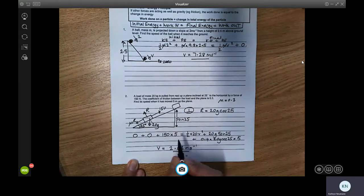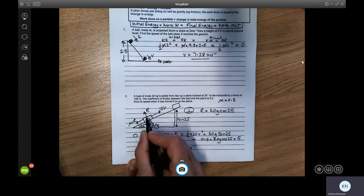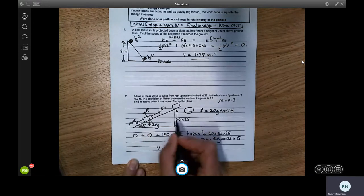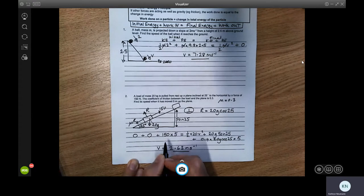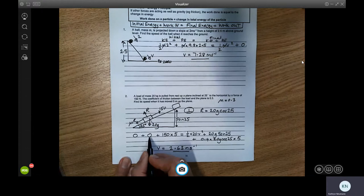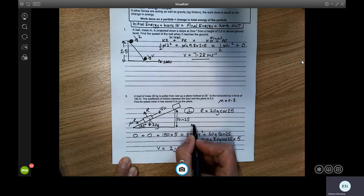So the first thing we need to do is find the normal reaction. So when we look at the normal reaction here, we've got R is equal to 20G cos 25 because that's the resolved force of the 20G. We're then going to apply the work energy principle. So if we look, we've got zero KE at the beginning because it's pulled from rest. It's got zero PE because we're taking this to be PE zero.